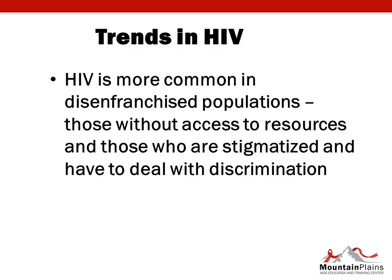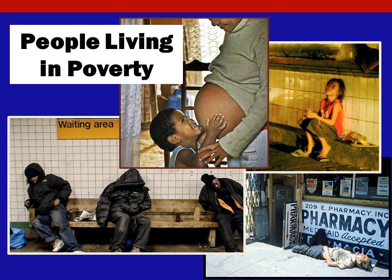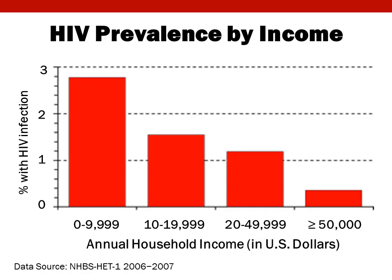I'd like to talk about a couple of trends in HIV. The first is related to the fact that HIV is more common in disenfranchised populations, which I define as those who do not have access to resources and those who are stigmatized. The first of these is poverty and I think it's probably the most important of all of these issues. This is demonstrated in this graph. There are clear demarcations between your annual income and the amount of HIV. Basically, it says that the poorer you are, the higher the prevalence of HIV.